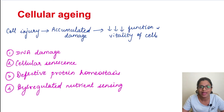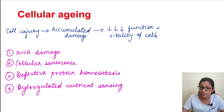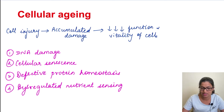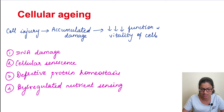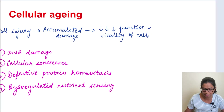So what are the mechanisms by which a cell undergoes aging? We have four main mechanisms: DNA damage, cellular senescence, defective protein homeostasis, and dysregulated nutrient sensing. We will see these one by one.